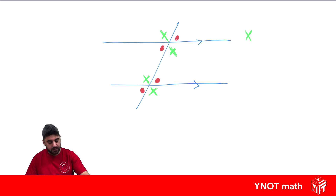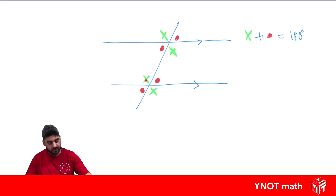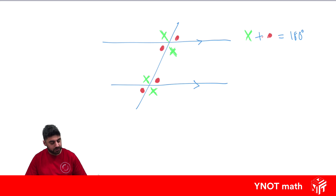Also, x plus our circle angle is always going to equal 180 degrees because they're both inside — being co-interior — but also up here they're supplementary with each other. And down here, same thing, because they lie on this straight line. So this is one of the most useful diagrams to know — in every case, you can always label a diagram with just two angles only.